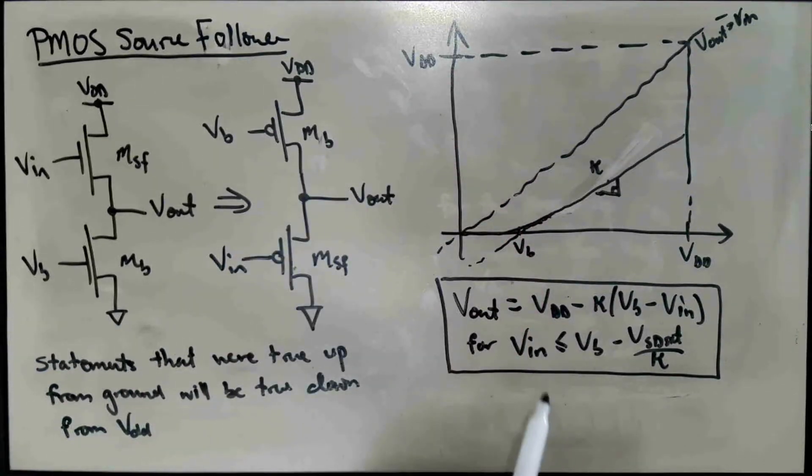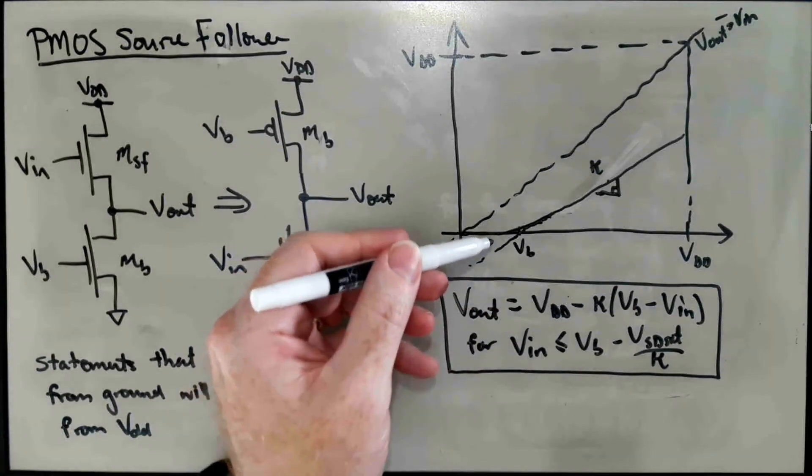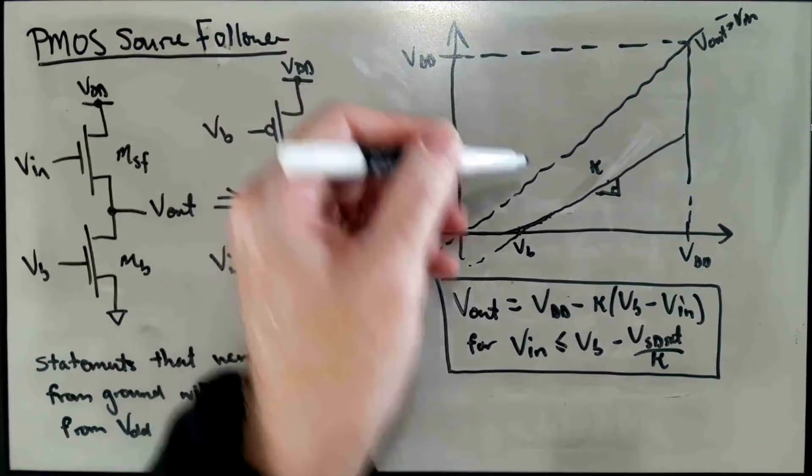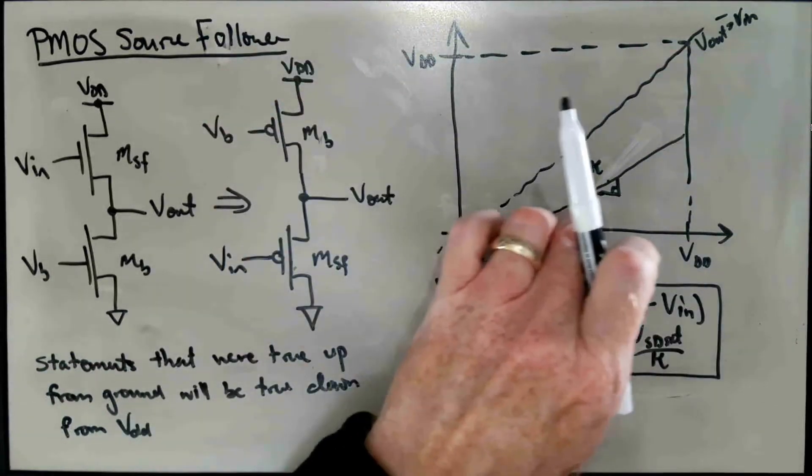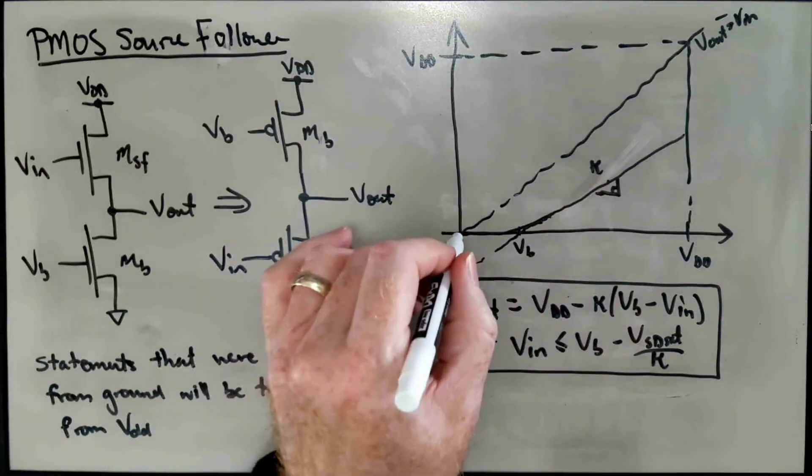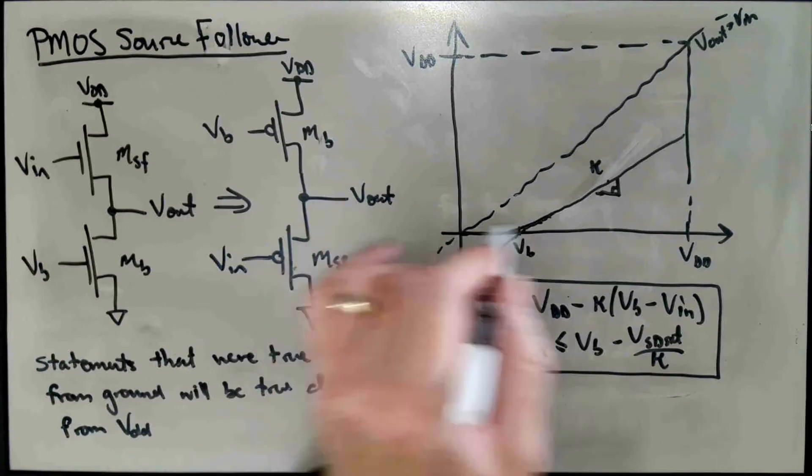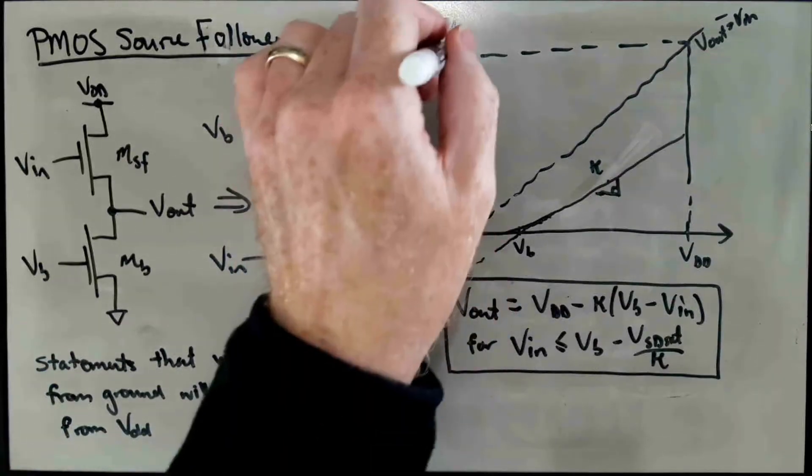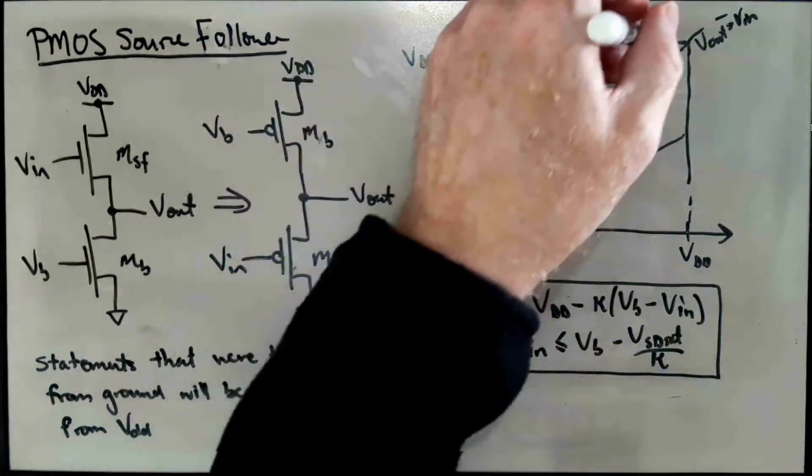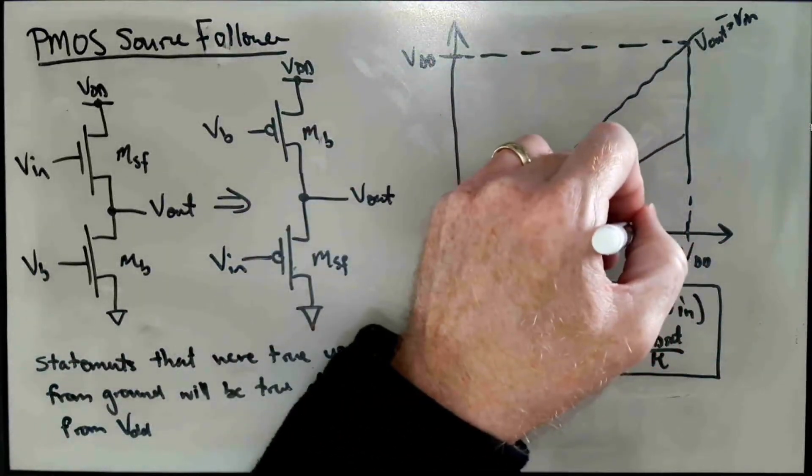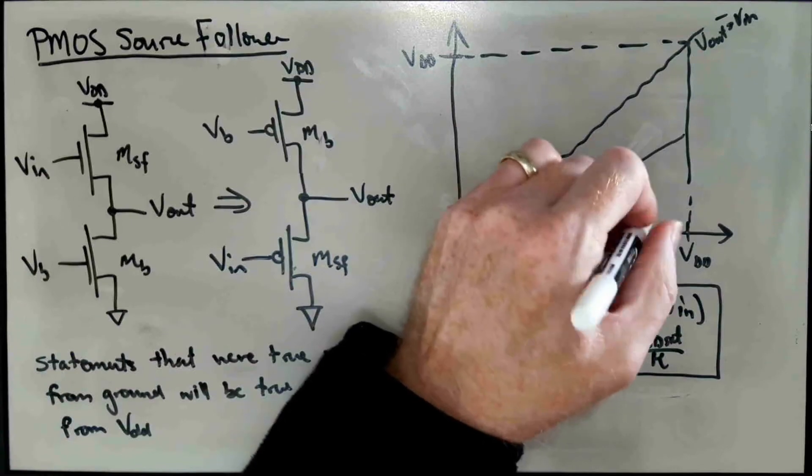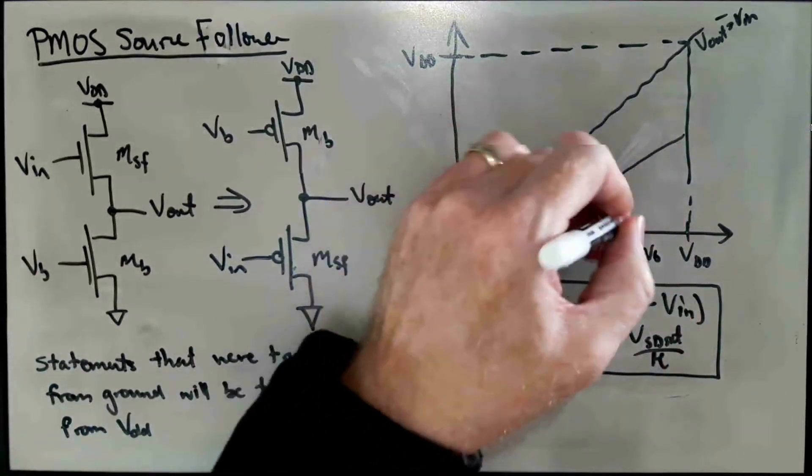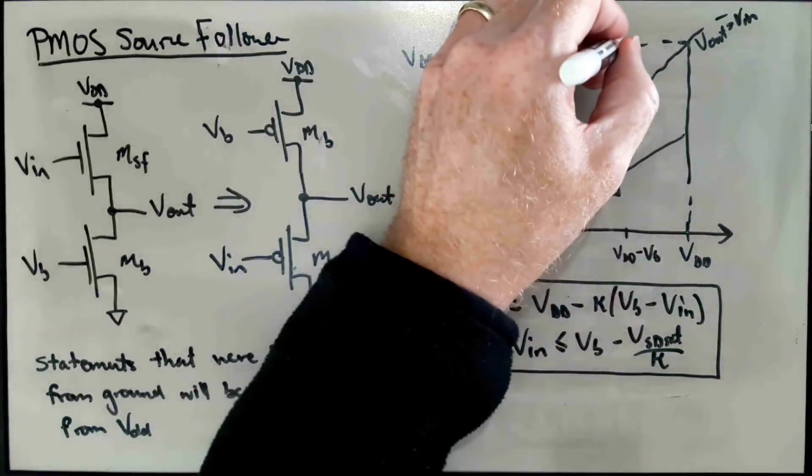And what was true up from ground maps into being true down from VDD on both axes. And so what we can do is we can basically flip this curve about. We can map this point here to VDD, we can map this point here to VDD, and we would get a curve that looks something like... this would be VDD minus VB here.